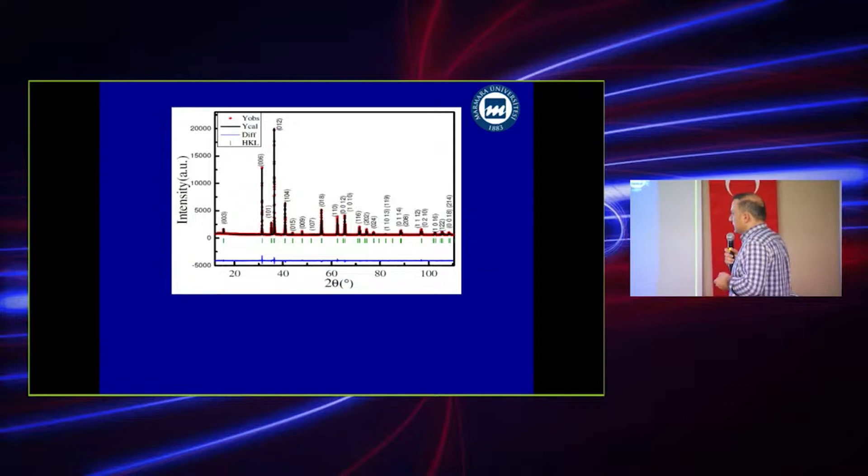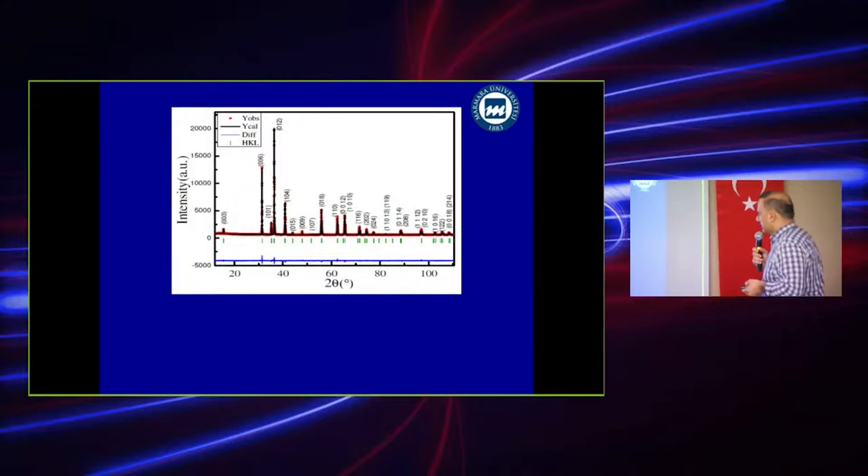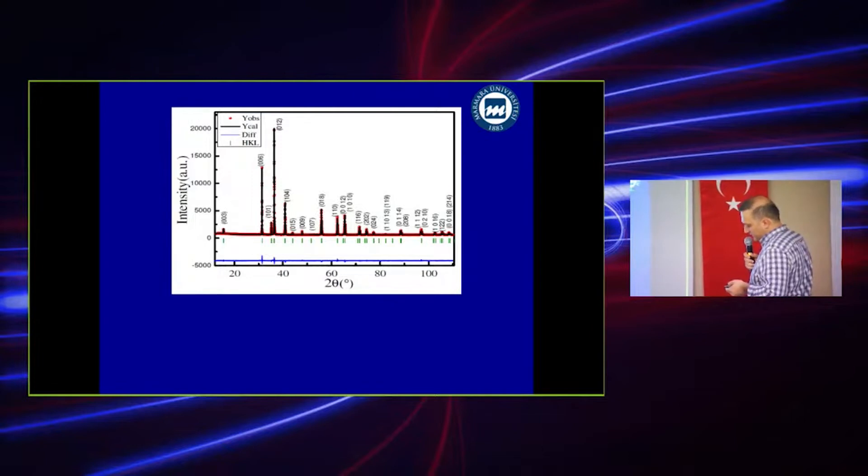As you see here, the curve given by the blue color is a difference. There is almost no difference between calculated and observed, so this means that the pattern is very good. The structure is studied and it is almost a pure sample we got.